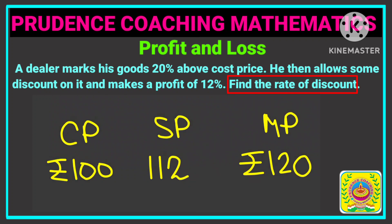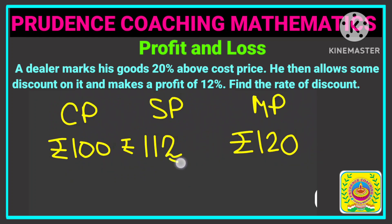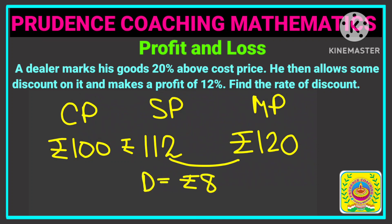We know discount equals MP minus SP, so 120 minus 112 gives us rupees 8. So rupees 8 is the discount. Discount percentage means discount divided by MP, multiplied by 100.